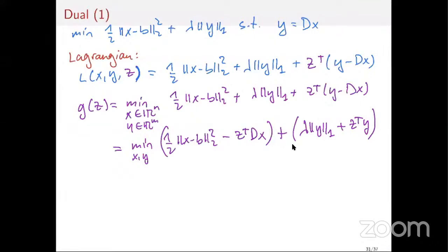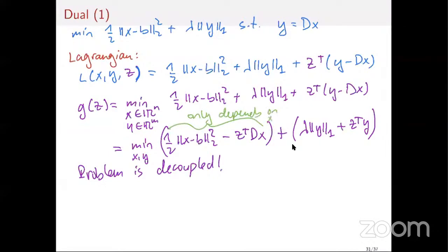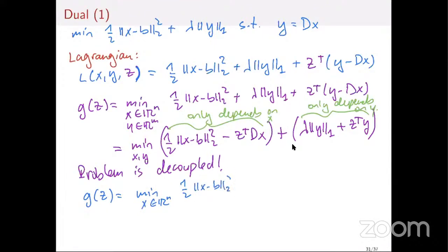The problem decouples: the first part only depends on x and the second part only depends on y. So g(z) equals the minimum over x of [one-half ||x-b||^2 - z^T Dx] plus the minimum over y of [lambda ||y||_1 + z^T y]. I can now look at each optimization problem independently.